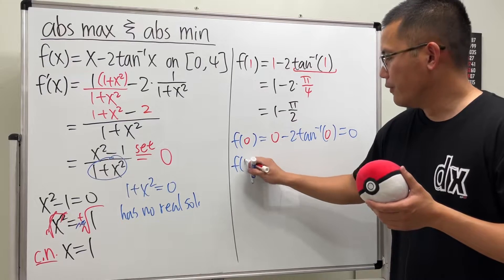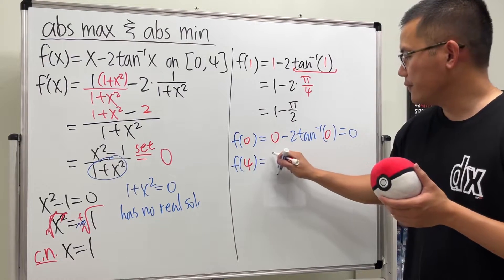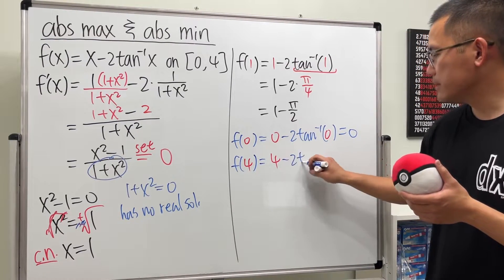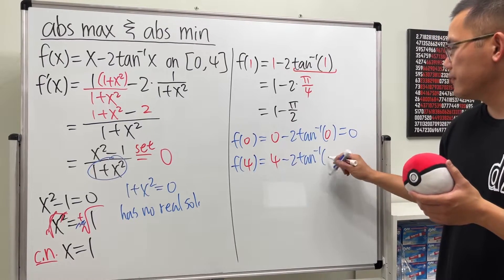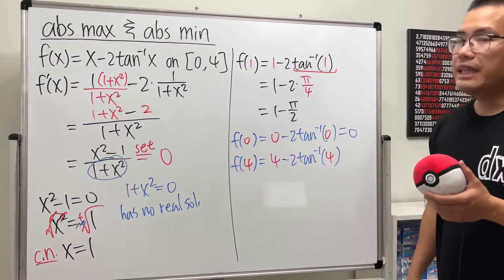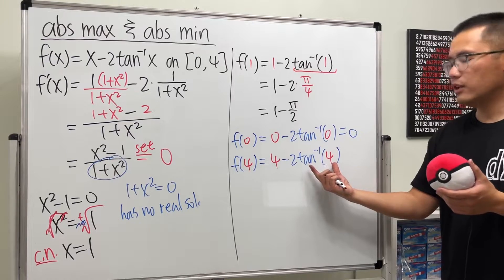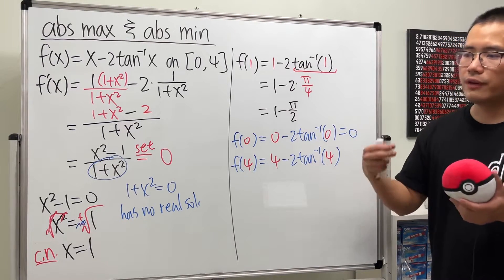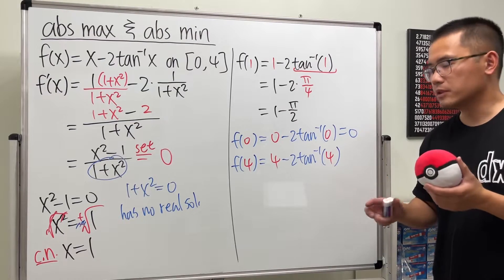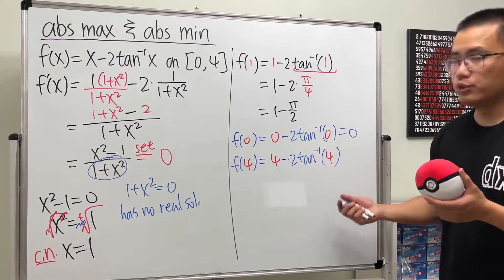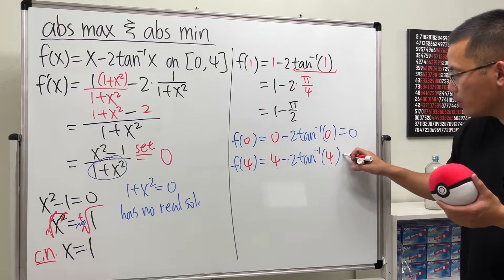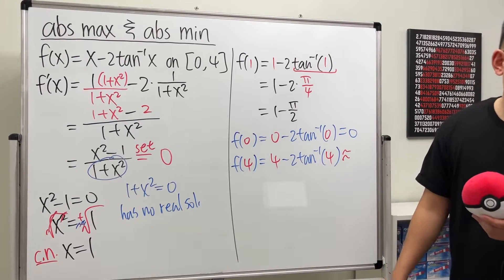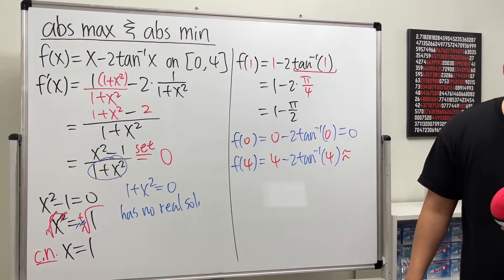Lastly, f(4). This is 4 minus 2 times inverse tangent of 4. And unfortunately, inverse tangent of 4, there's no nice angle so that tangent of that angle will give us 4. So to compute this, you will just use a calculator for it. And I will tell you, this is approximately 1.35.